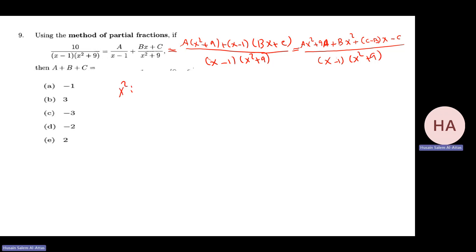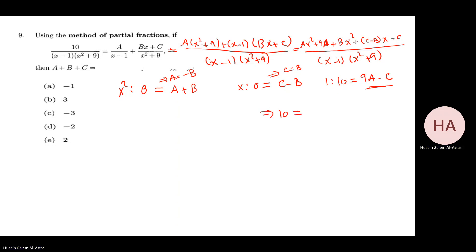So coefficient of x² gives A + B = 0; coefficient of x gives C - B = 0, so C = B; constant gives 9A - C = 10. From A = -B and C = B, substituting into the constant equation: -9B - B = 10, so -10B = 10, meaning B = -1. Then C = -1 and A = 1. Therefore A + B + C = 1 - 1 - 1 = -1.